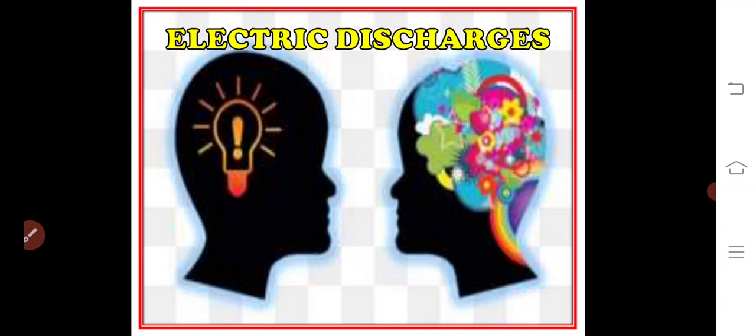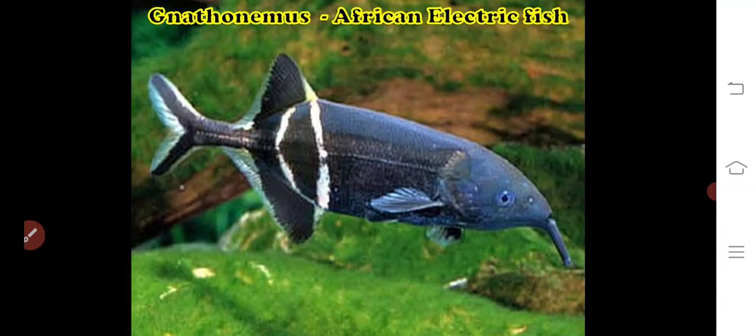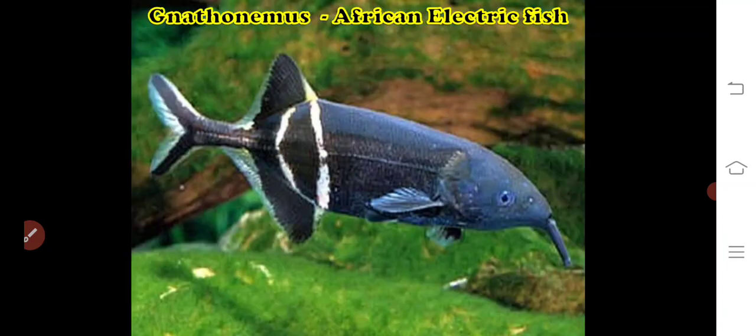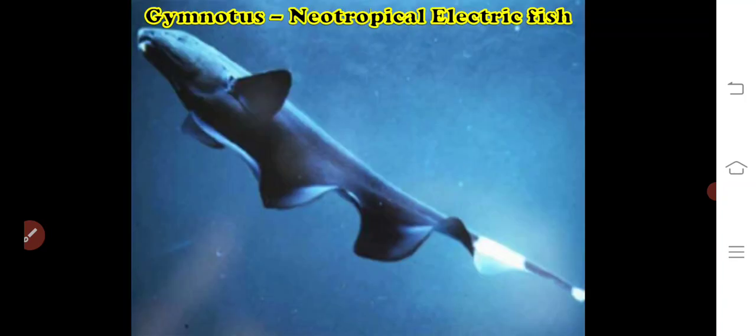The fifth modality is electrical discharge. Electrical discharges can also be used for signals. Two orders of freshwater fish, the Mormyriformes of Africa and the Gymnotiformes of the neotropics. Gnathonemus are African electrical fish and Gymnotus are neotropical electrical fish. Both of them show nocturnal mode of life and live in muddy water. These fish create an electric field and use distortions induced by nearby objects to navigate and find food. Not surprisingly, they also use the same electrical discharges to communicate with each other.